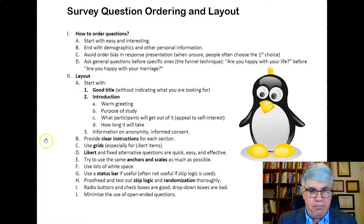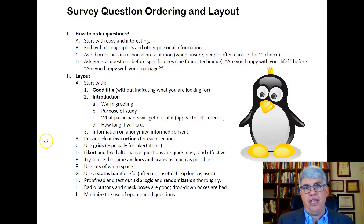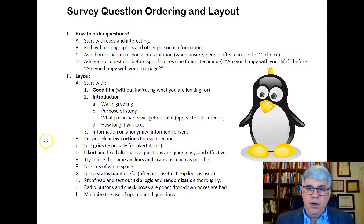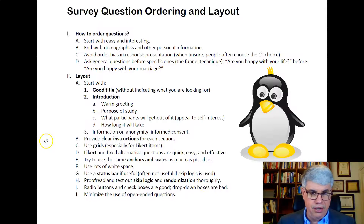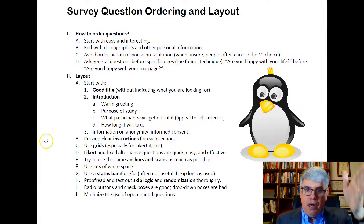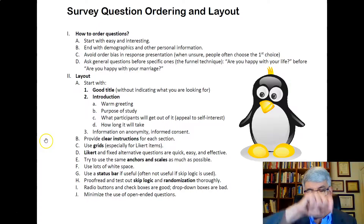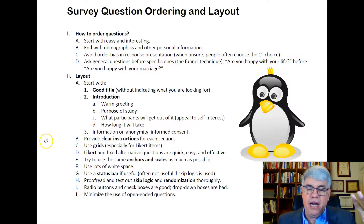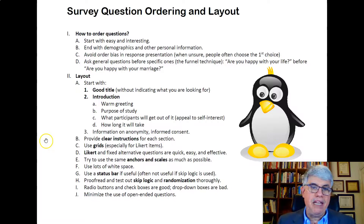You need to provide clear instructions for each section — say exactly what respondents are supposed to do. For example: 'Indicate how much you agree with each of the following statements,' or 'Think of your coworkers — how would you rate the quality of your relationship with them using these words?' Use grids, especially with Likert items, where you have all the statements on the left side and columns for strongly disagree, disagree, neither agree nor disagree, agree, and strongly agree — maybe 10 items in a grid. People can go through those really fast. Do as many Likert and fixed-alternative questions as you can, because they're quick, easy, and effective.